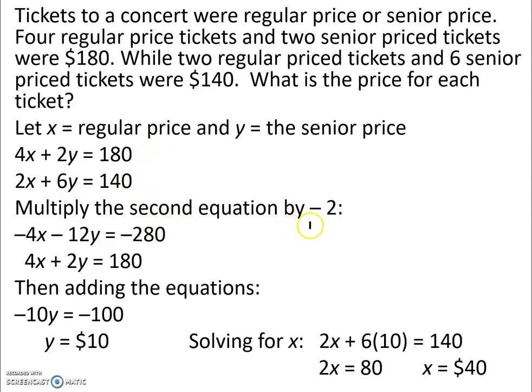We multiply the second equation by negative 2 and negative 2 times 2x is negative 4x. Negative 2 times 6y is negative 12y and negative 2 times 140 is negative 280. Bringing down the first equation, 4x plus 2y equals 180. Then we add those two equations and when we do, negative 4x plus 4x, the x's go away. Negative 12y plus 2y, we're left with negative 10y. And we have negative 280 plus 180 leaves us negative 100.